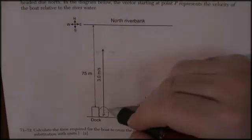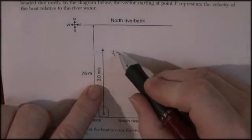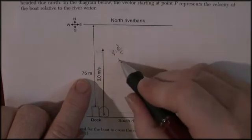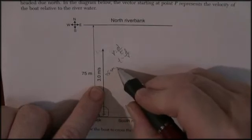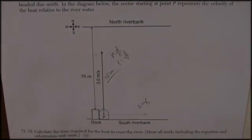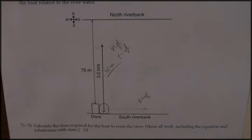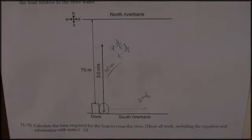The boat travels at three meters per second relative to the river and is headed due north. Now I can already tell you it's going to take 25 seconds to get across, because if velocity equals distance over time, the velocity is three meters per second and the distance is 75 meters, so time equals 75 divided by 3, which is 25 seconds. And in that 25 seconds it's going to go 50 meters downstream.